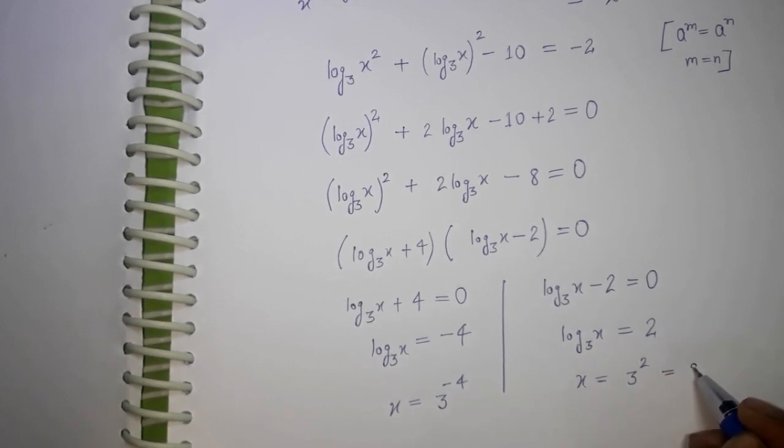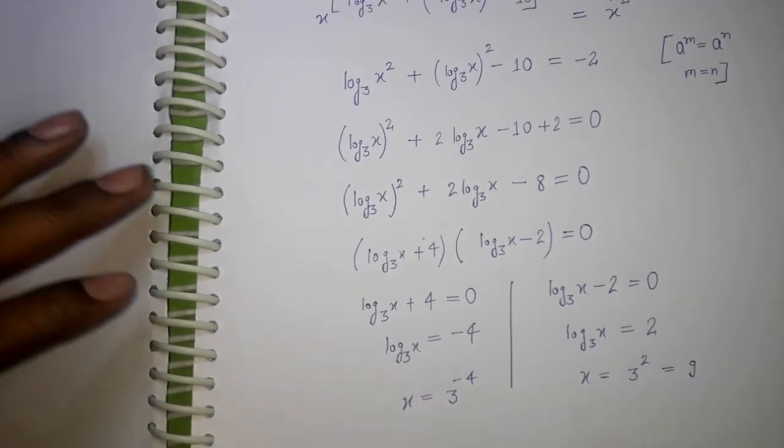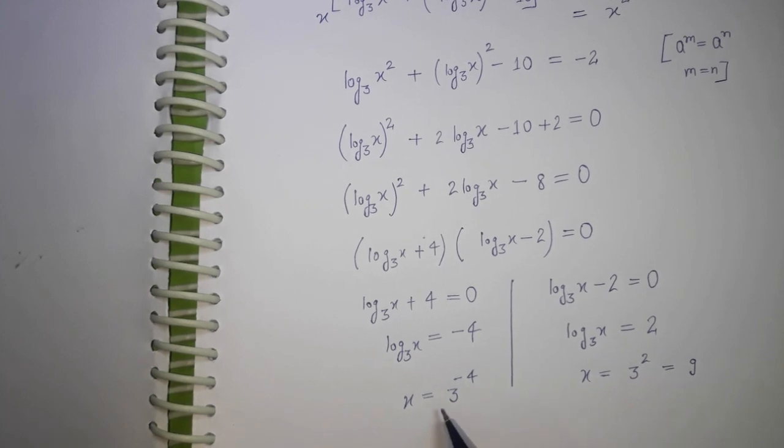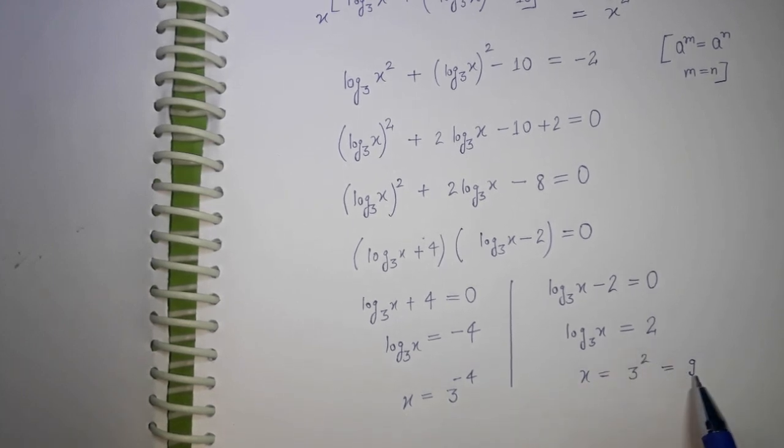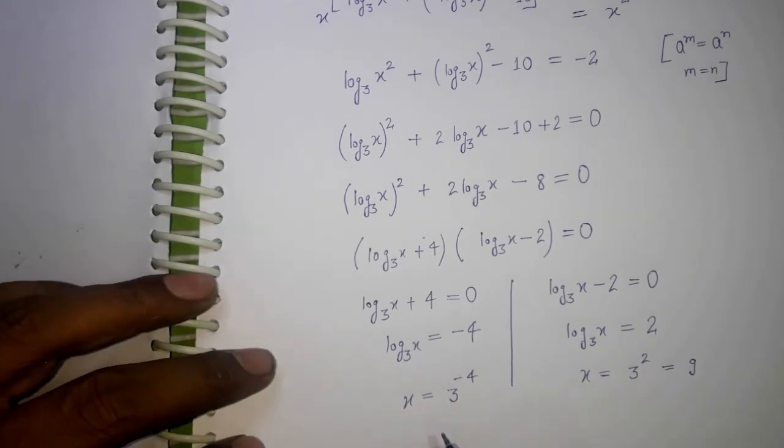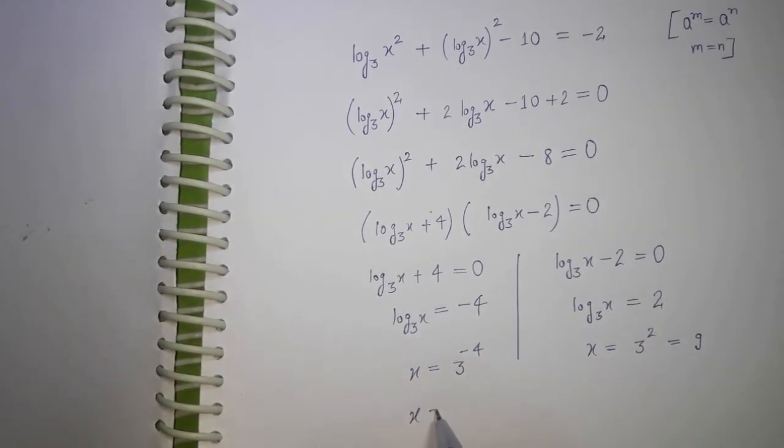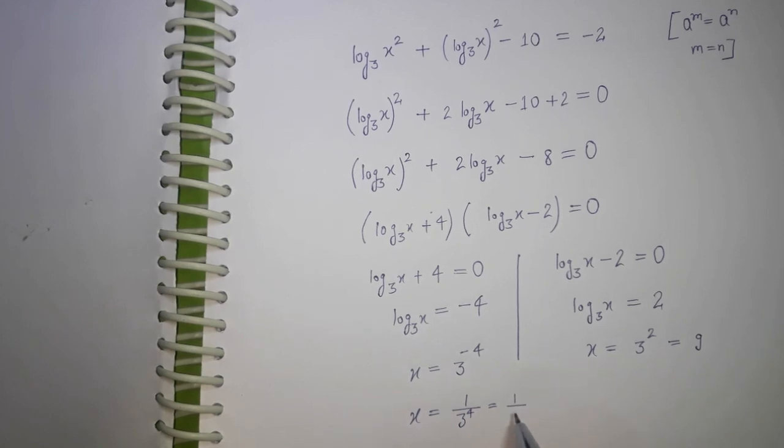So we have 1 upon 3 to the power 4, that equals 1 upon 81. And we also get x = 9. So these two values are the solutions for x.